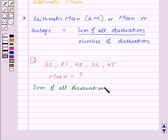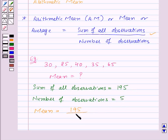Which will be equal to 30 plus 25 plus 40 plus 35 plus 65, which is equal to 195. And here the number of observations is equal to 5, as there are 5 observations. So now mean is given by sum of all observations upon number of observations, so this will be equal to 195 upon 5, which will be equal to 39.